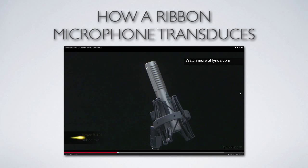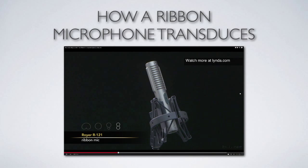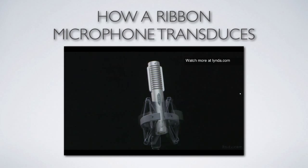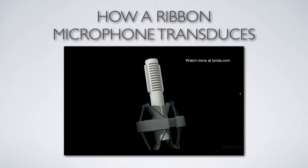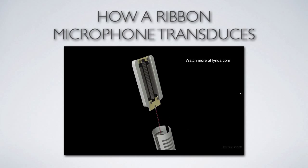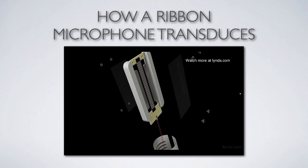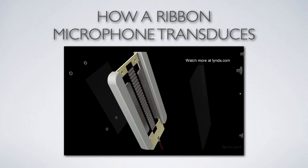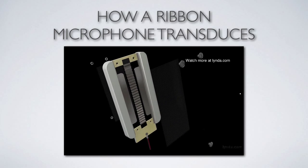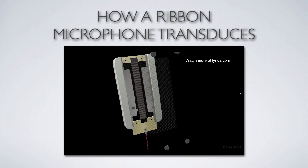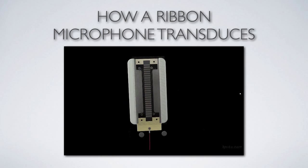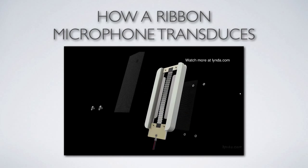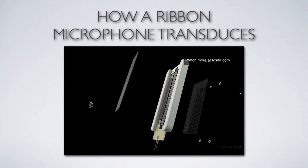This is the Royer 121, the non-phantom-powered version. Let's take it apart — there's the ribbon moving with the sound pressure changes, shown in a nice 3D animation.